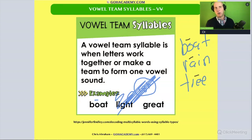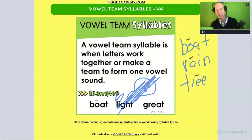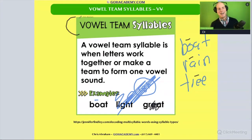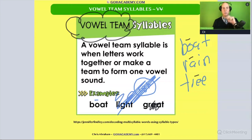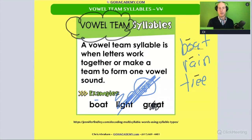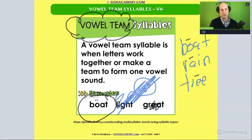'Great' is actually not a vowel team — it's a vowel digraph. The rule for a vowel team is when we have two vowels that make one sound and the first vowel is long and the second one is silent, like 'boat,' 'rain,' and 'tree.' So those are your examples of a vowel team.